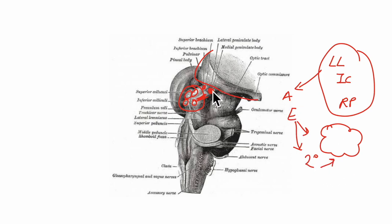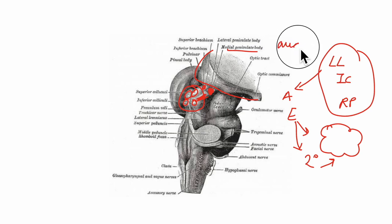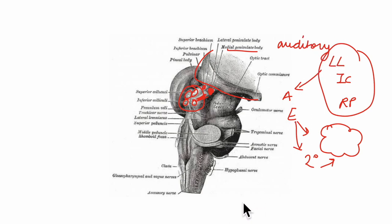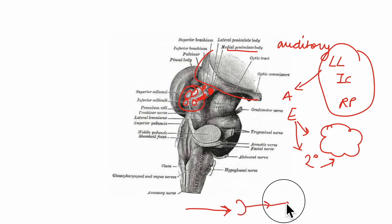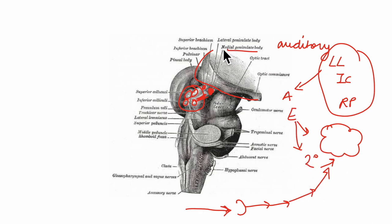The function of the medial geniculate body is that it acts as the last relay station on the pathway of auditory impulses to the cerebral cortex — that is, the entire auditory pathway — where connections are made and impulses are finally sent to reach the cerebral cortex.